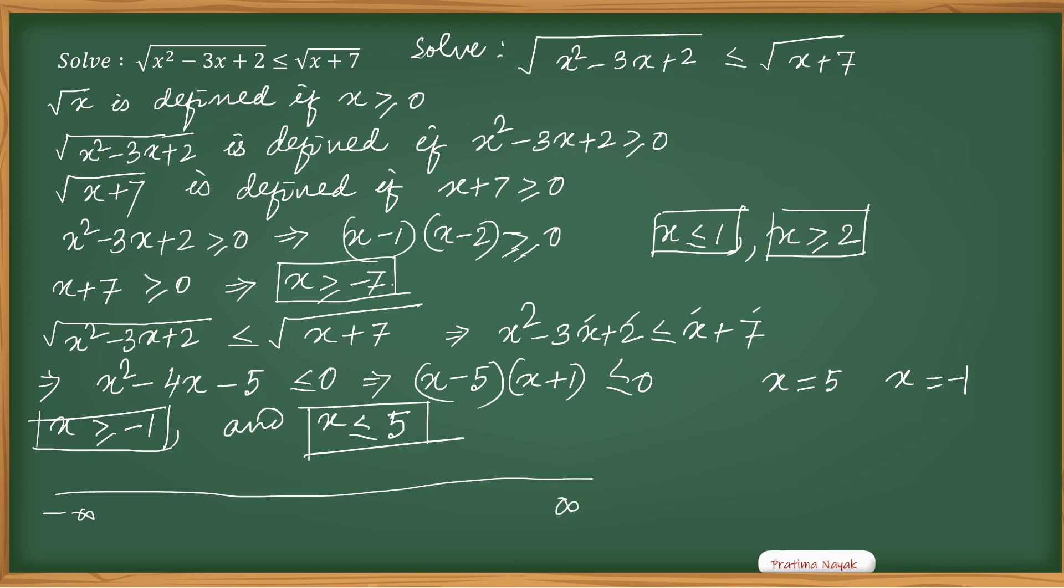First is x ≥ -7. This will come first, this is the smallest one. So I will go to right hand side. Then x = -1, and x > -1. Then we will go to right hand side.